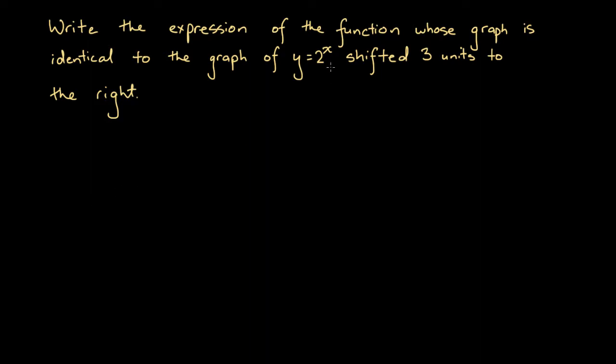In other words, this is saying imagine that we have this graph of y equals 2x. If we shifted 3 units to the right, then that graph would represent a different function than this original function.